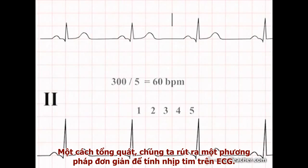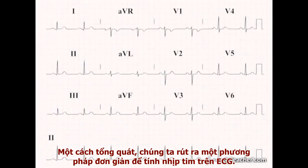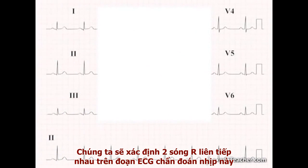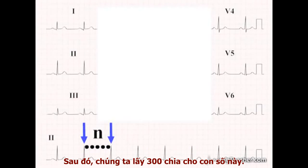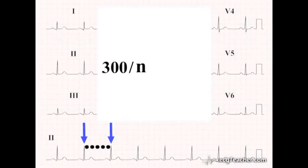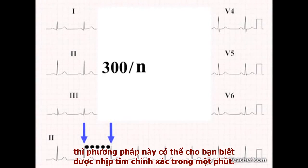Generalising, we've found a simple method for calculating heart rate from an ECG. Identify 2 R waves on the rhythm strip, count the number of large squares between them, then take this number and divide it into 300. Provided the heart rhythm is regular, this method gives you an accurate heart rate in beats per minute.